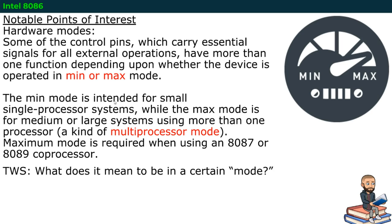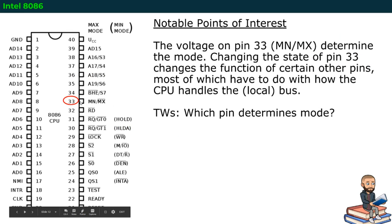These control pins have more than one function, depending upon whether the device is being operated in a minimum or maximum mode. The minimum mode is intended for a small single processor system. While the maximum mode is for medium or large systems using more than one processor. So, remember when we talked about the coprocessor? If you got an 8086 and you're working with an 8087, then this maximum mode would have needed to be triggered. As a reminder, there it is. If this pin is a 1, you are in maximum mode. When you change the voltage on that pin, some of the other pins will have a different function, most of which is related to how the CPU handles the local bus.